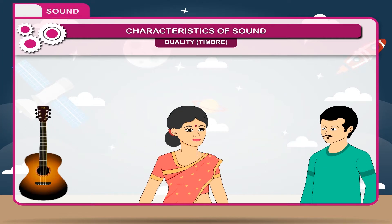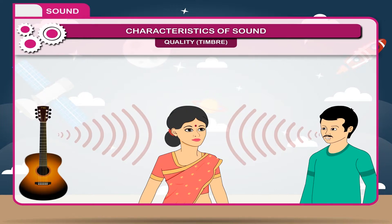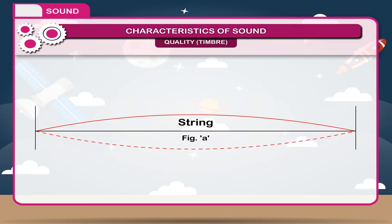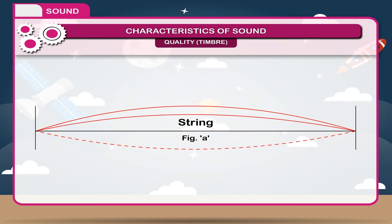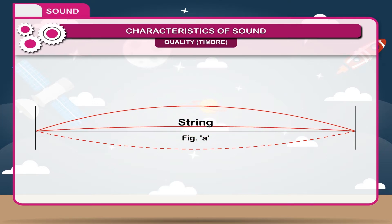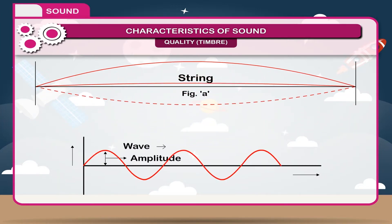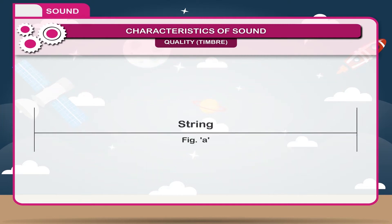Quality and timbre. It is that characteristic of sound which enables us to distinguish between musical notes emitted by different musical instruments, even though they have the same pitch and loudness. A single source produces more than one frequency. When the whole string vibrates, the note produced is called the fundamental tone, as shown in figure B. The fundamental tone has the lowest possible frequency and pitch.